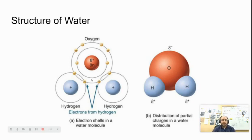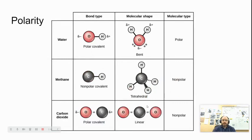This causes water to polarize, or have opposite ends — the oxygen end of the molecule tends to have a slightly negative charge, and the hydrogen ends tend to have a slightly positive charge. This causes water to behave differently from, say, methane, which is nonpolar because all of the electrons are equally shared. A good way to think of polarity is the unequal sharing of electrons.